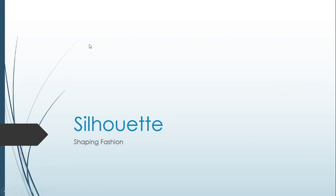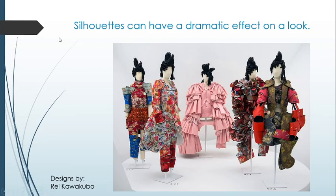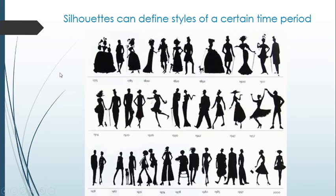Today we're going to talk about silhouette and how it can shape fashion. Along with color, these are one of the first things that really impact the viewer. Designers use silhouette just like they use color to make a dramatic impact. Silhouettes can have a dramatic effect on a look, as we can see in these examples by Rei Kawakubo. Silhouette's big shapes and the emotions it can draw have been around as long as clothing itself.